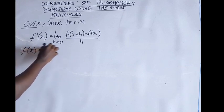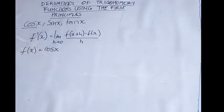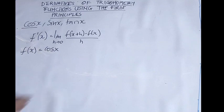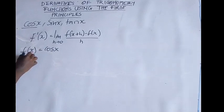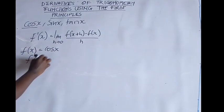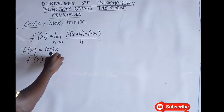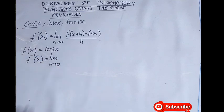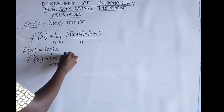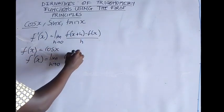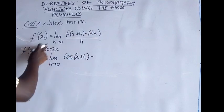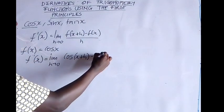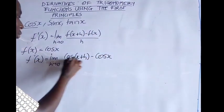Let's take f(x) = cos(x). In this case, wherever we see x we replace it by x+h, so we get the limit as h approaches zero of cos(x+h) minus cos(x), all over h.